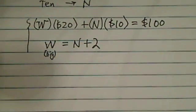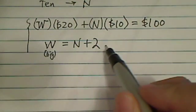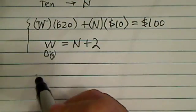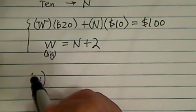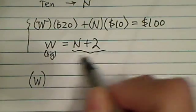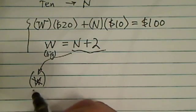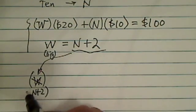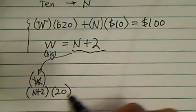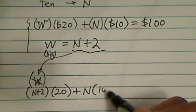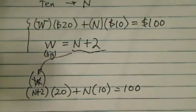Now you have two variables, two equations, and the way it's set up, substitution is the best way. So let's try it. W is going to be substituted with N plus 2. So we're going to put (N + 2) times 20 plus N times 10 equals 100.